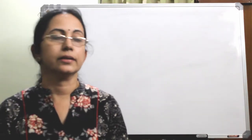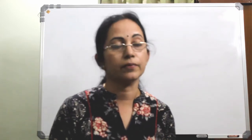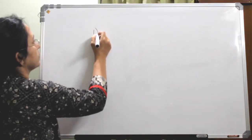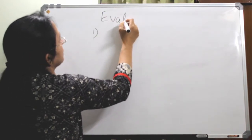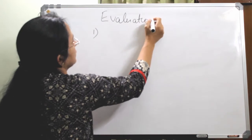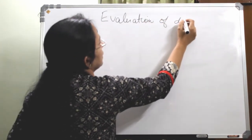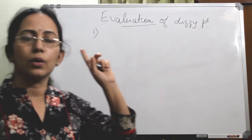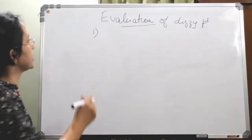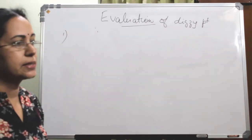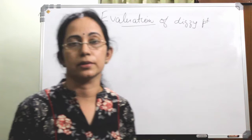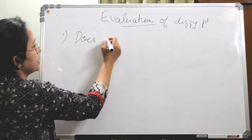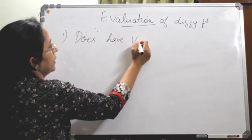After the history taking, the examiner should be able to answer the following questions from the patient's response. In the evaluation of a dizziness patient, all these important questions should be answered. The first one is: does the patient have vertigo? That is the first question you should be able to answer.